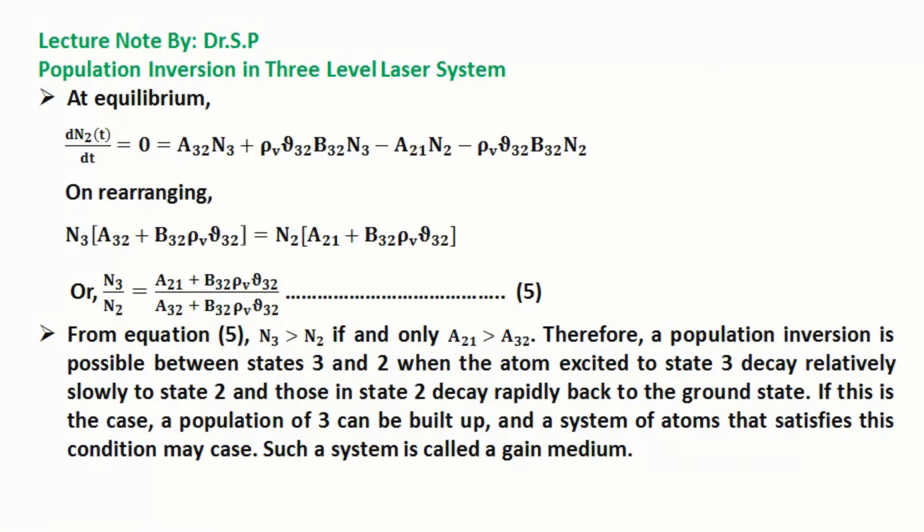From equation 5, the number of atoms in the third energy state is greater than the number of atoms in the second energy state if and only if A21 is greater than A32. Here, A21 and A32 are Einstein coefficients for spontaneous emission from 2 to 1 and 3 to 2 respectively.